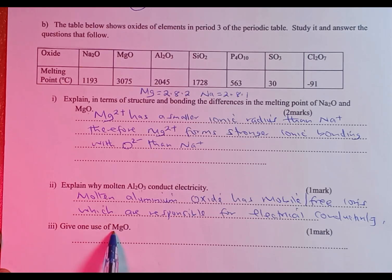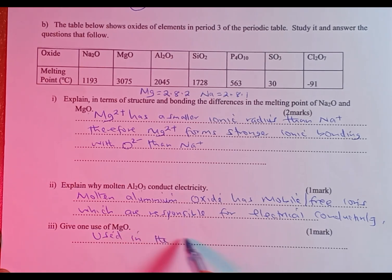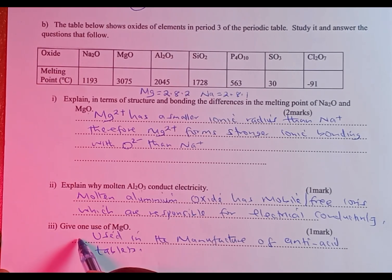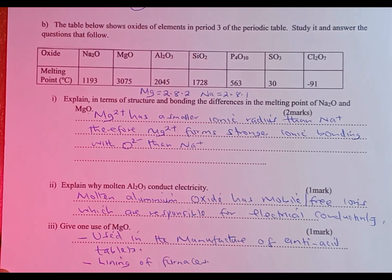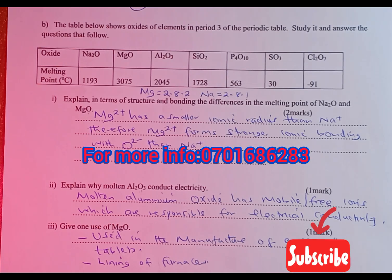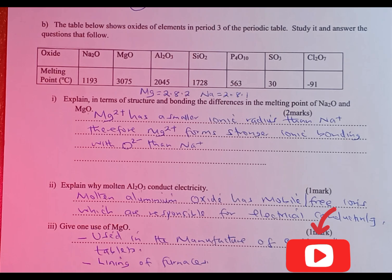Next, give one use of magnesium oxide. Magnesium oxide is used in the manufacture of antacid tablets. It can also be used as the lining of furnaces.